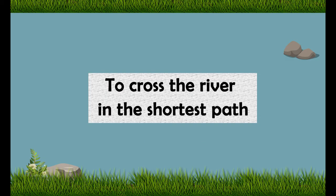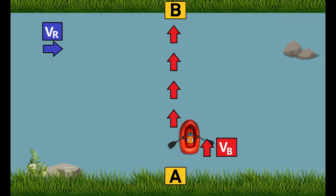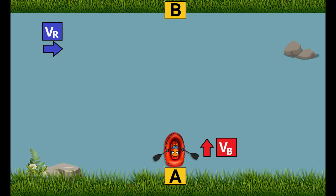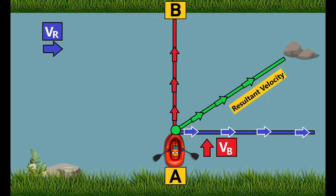Now there are three models of questions that can be asked based on this scenario. The first one is to cross the river in the shortest path. You might know that the shortest path between any two points is a straight line. Our friend also knows that and he is going to pedal his boat towards point B as quick as possible — and look what happened, he crashed on the rock. He did not consider the speed of the river. When he decided to move towards point B from A, the two velocities — vr, the velocity of the river, and vb, the velocity of the boat — were perpendicular to each other, causing a resultant velocity that carried him in a different direction.